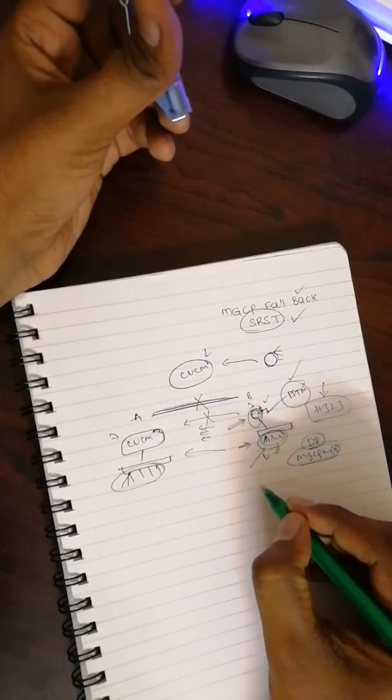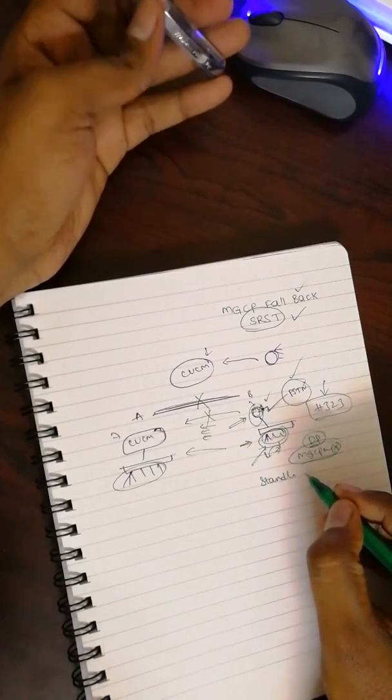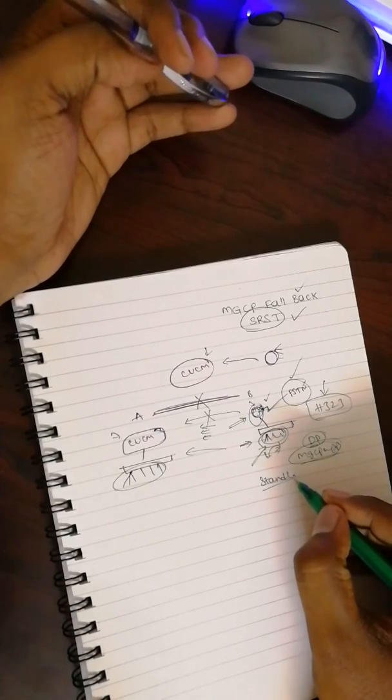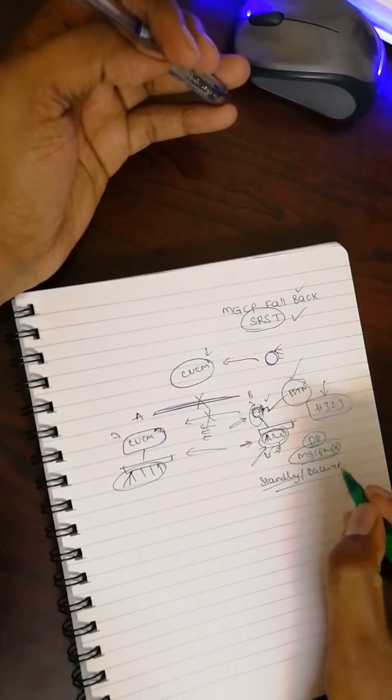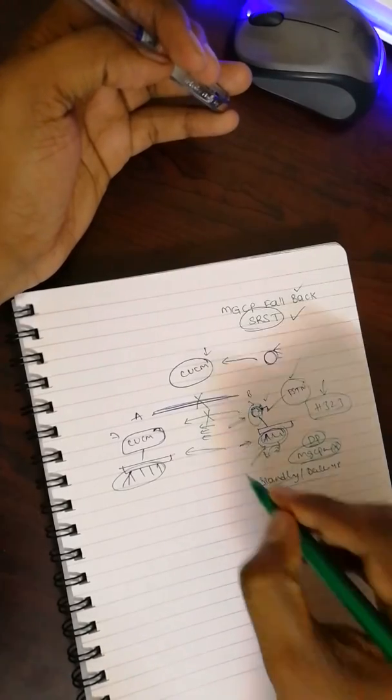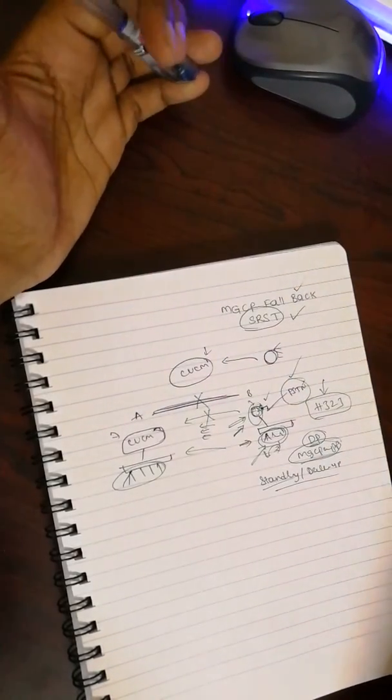Once the SRST functionality is enabled, all the IP phones which are there at Site B will be getting a standby or backup CUCM server IP address, standby backup TFTP server IP address, and that standby IP address would be this CME's gateway IP address.